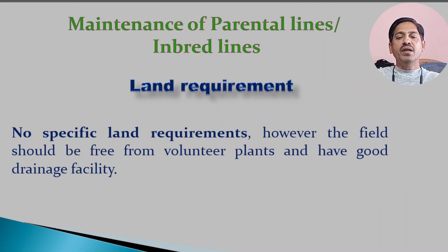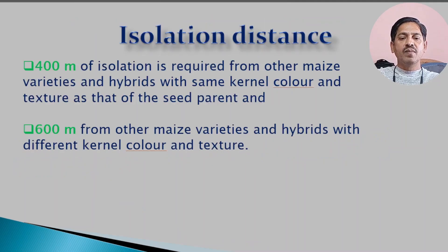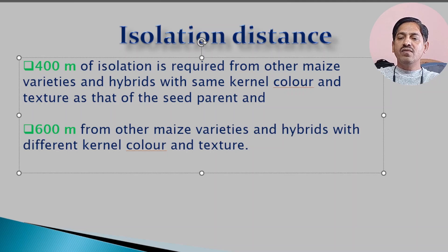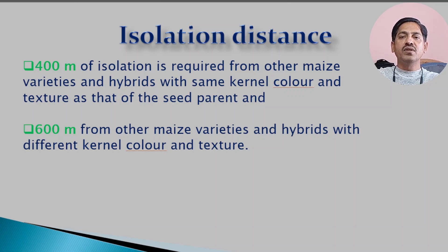For maintenance of parental lines or inbred lines, no specific land type is required, but the land must be free from volunteer crops. The isolation distance of 400 meters is required from other maize varieties and hybrids with the same kernel color and texture. If maize varieties and hybrids with different kernel color and texture are located around your seed production plot, you have to increase the isolation distance up to 600 meters.